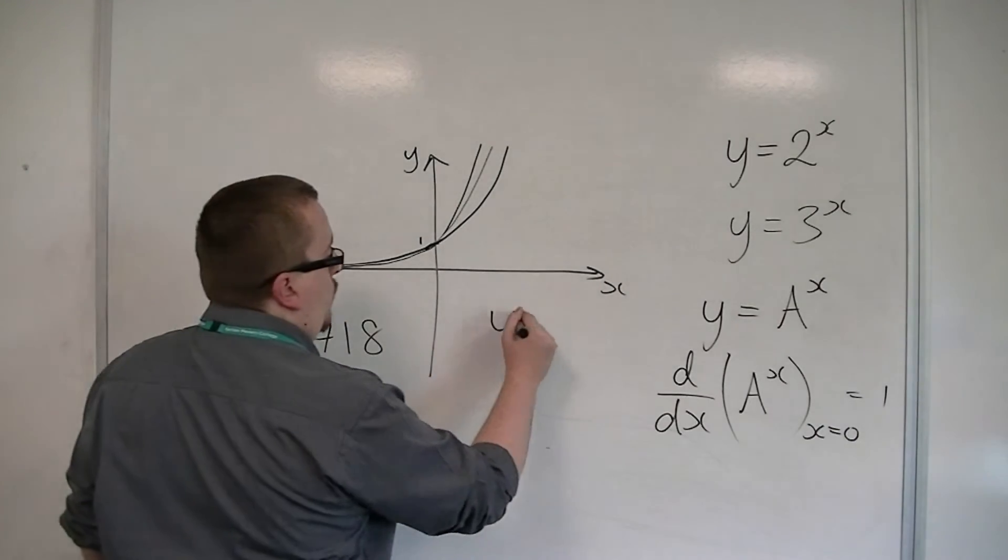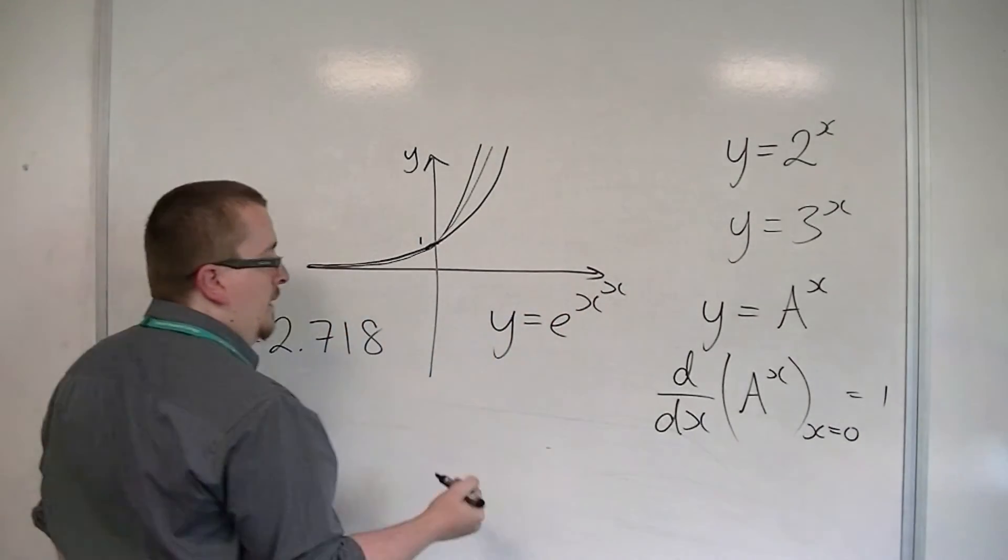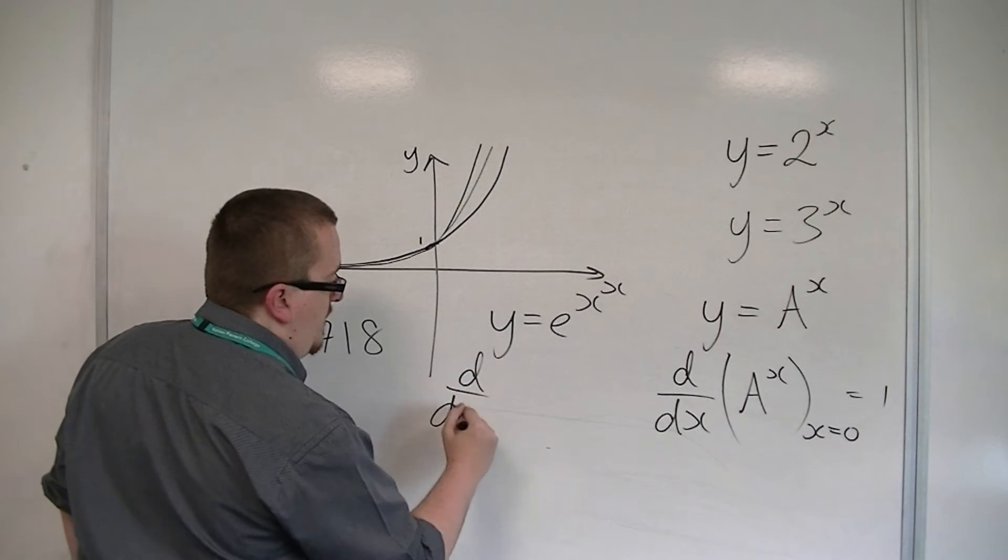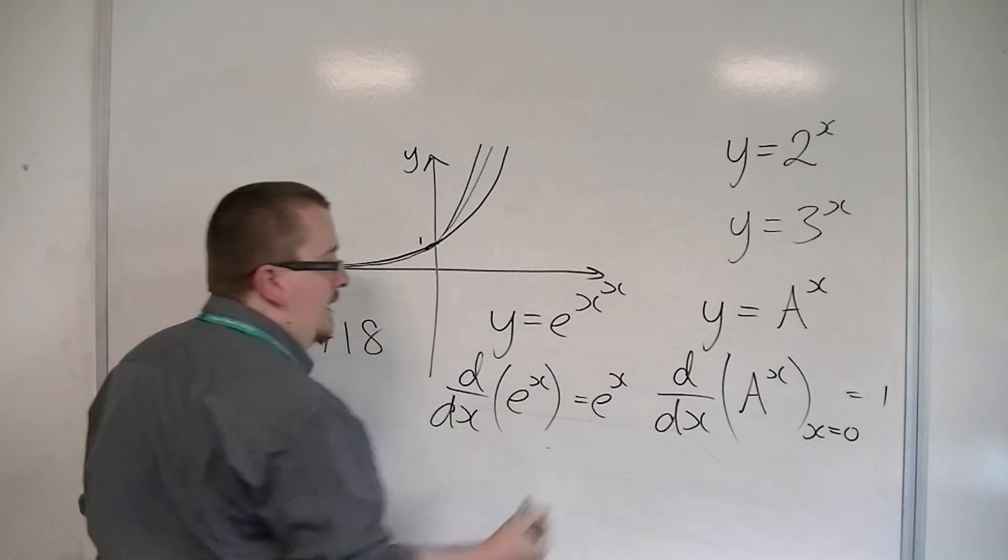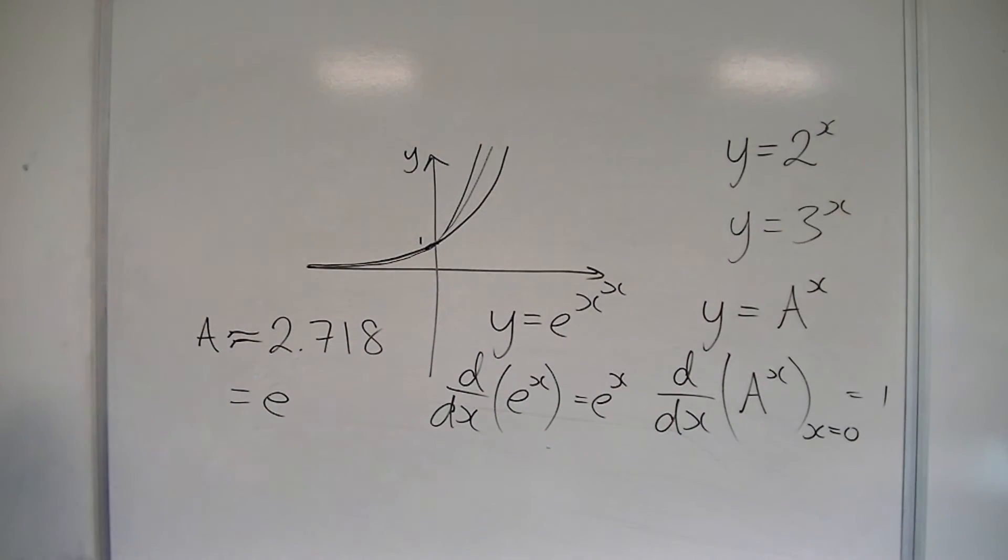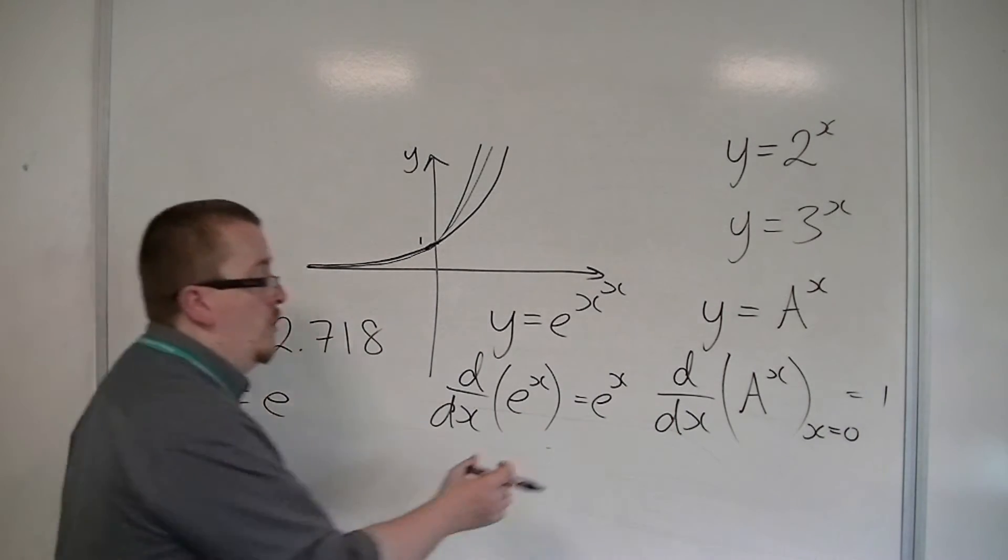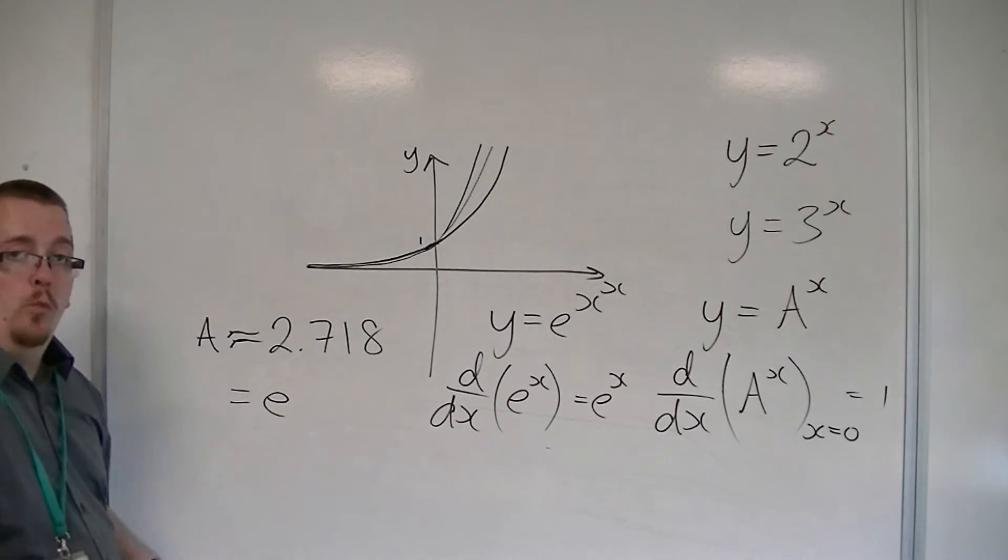If I have y equals e to the x, then d by dx of e to the x is just e to the x. So that when x is 0, we get e to the 0, which is just 1.